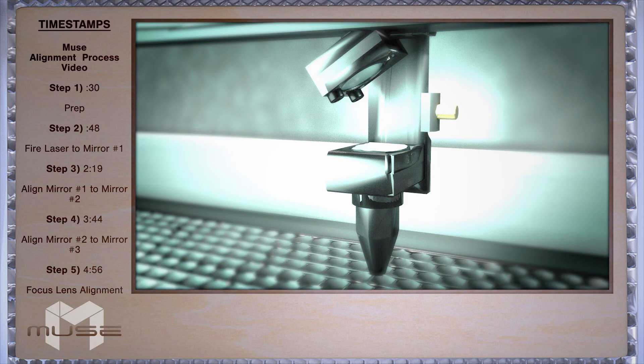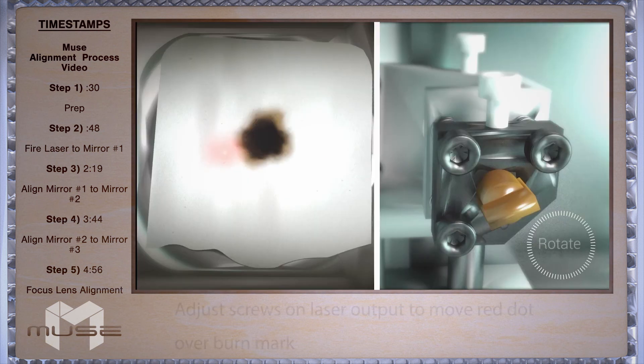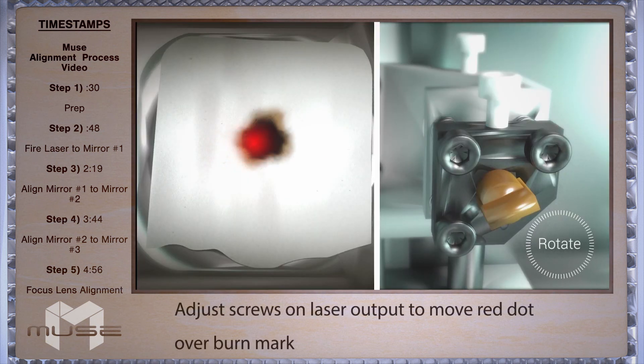Now with the lid closed go ahead and test fire. Once again we're going to adjust the red beam diode so it's on top of your burn mark. And now you have successfully aligned your mirrors.